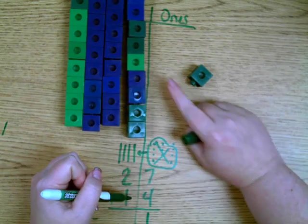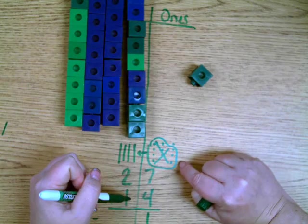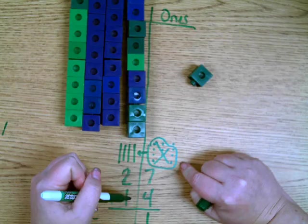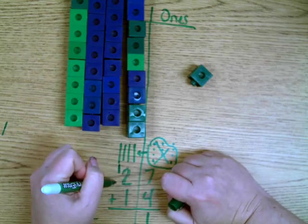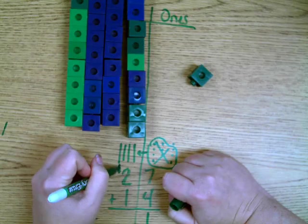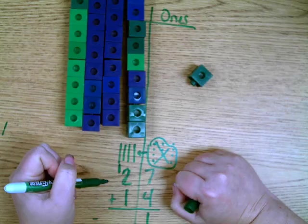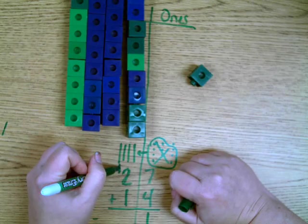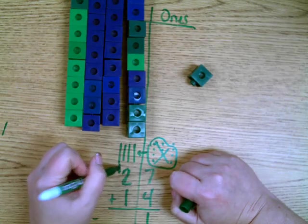But we also moved that group of ten over. So what does that look like? Where is that group of ten going to go? That group of ten goes over into the tens place, right? So now we have one plus two plus one.